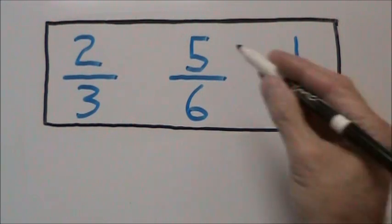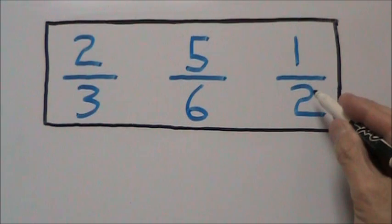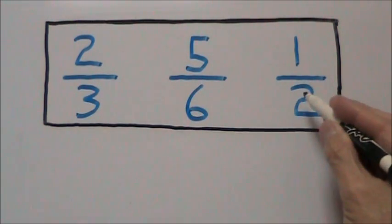There are three fractions on the board: two-thirds, five-sixths, and one-half. We notice that they have different denominators.